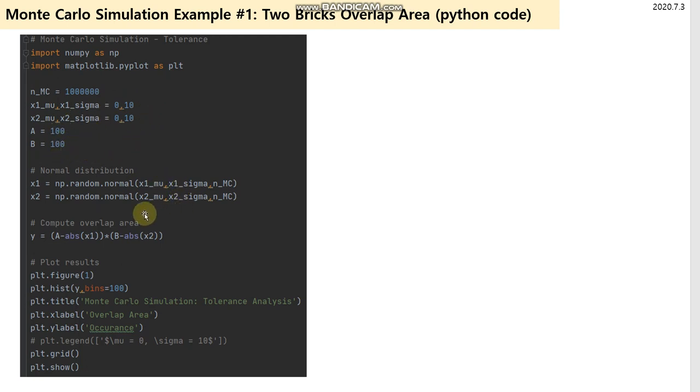Then generate random numbers based on mean, sigma, and the total number of Monte Carlo simulations. Then compute the overlap area using the simple equation.